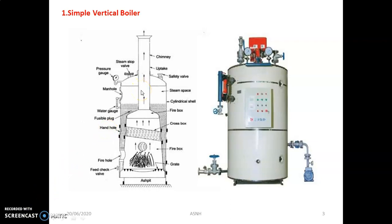The next important aspect of the simple vertical boiler is accessories. Mountings and accessories are separate categories. Mountings are very essential to run a steam power plant smoothly — without mountings, no steam power plant can operate. Accessories, on the other hand, improve the performance and overall efficiency of the steam power plant, but their absence does not affect steam generation directly.